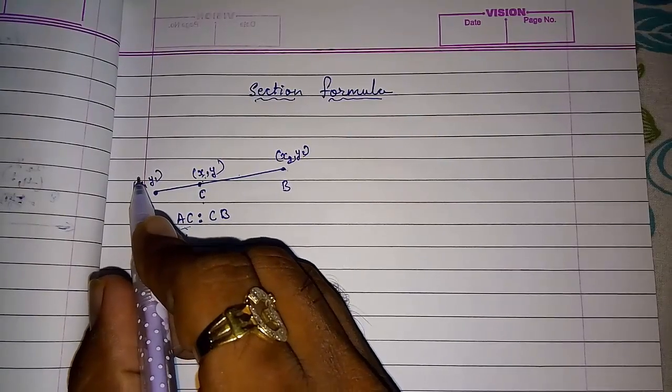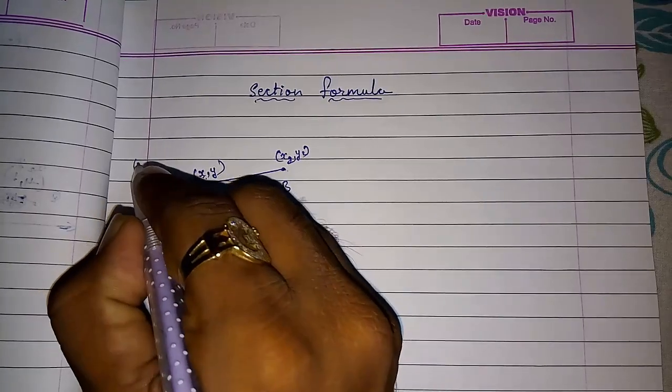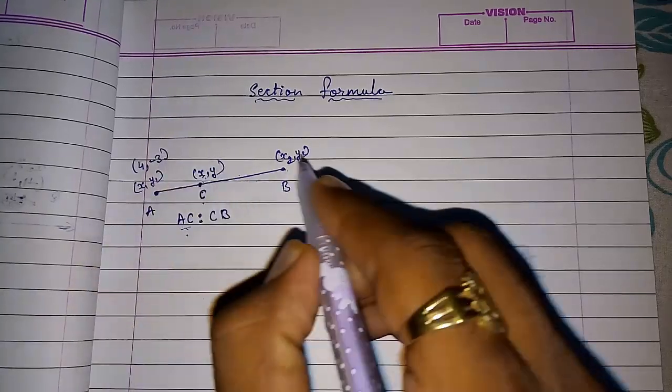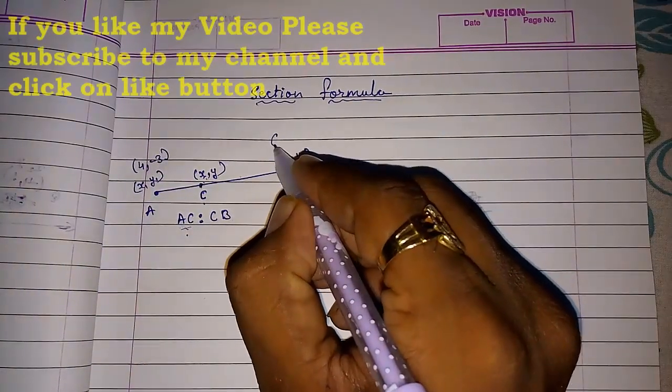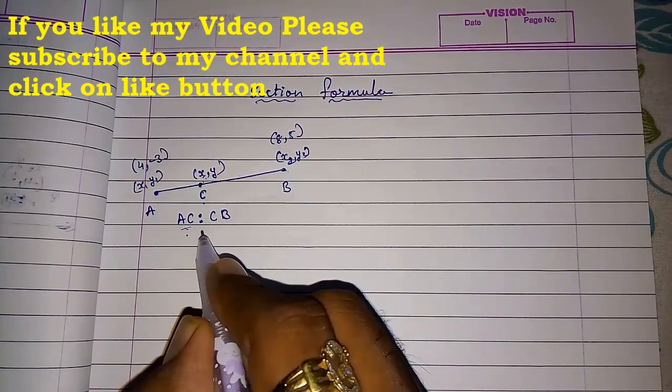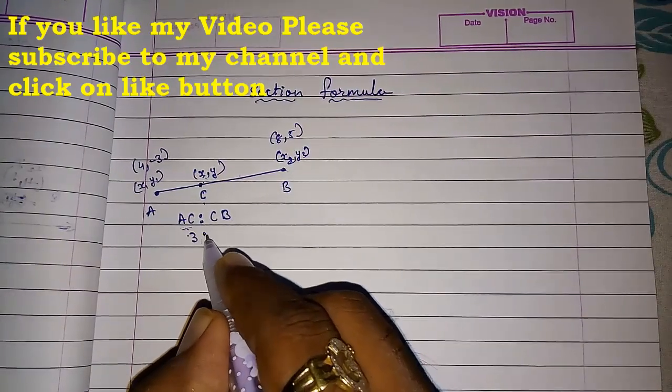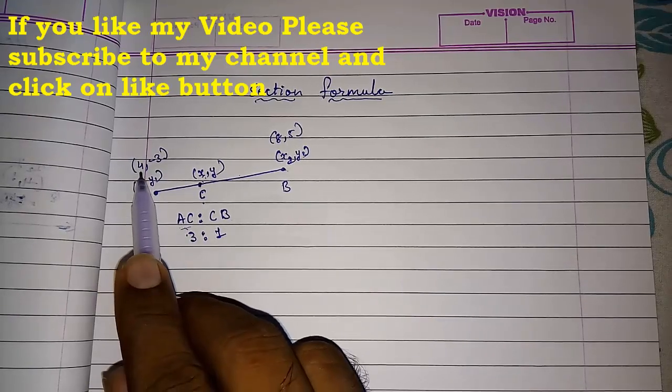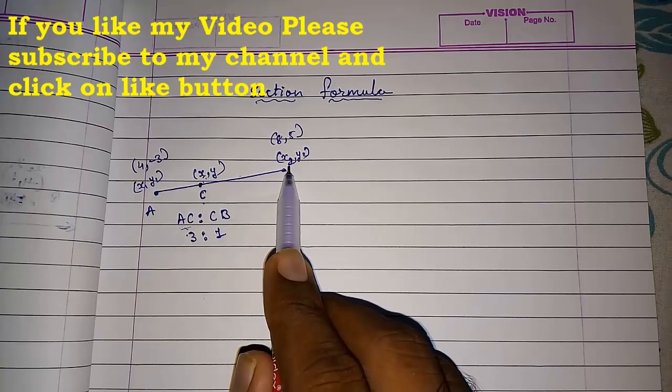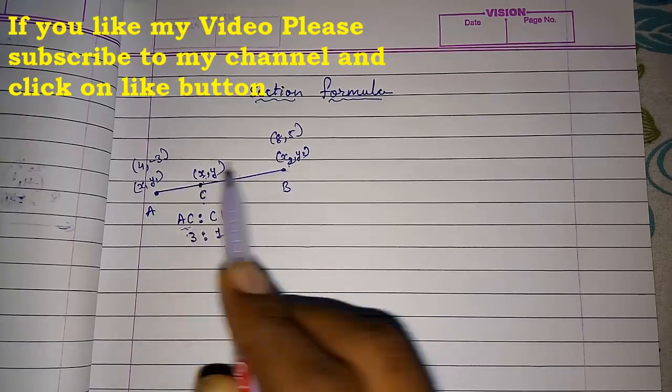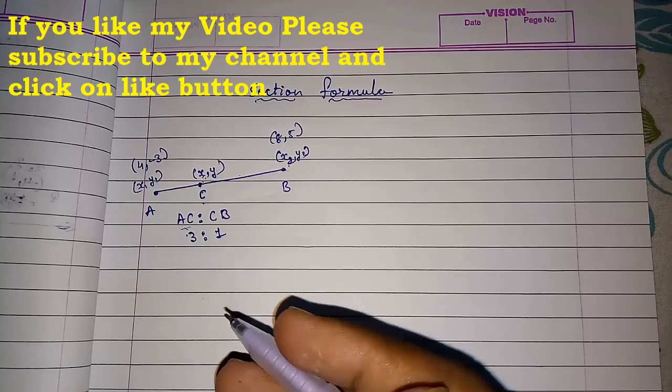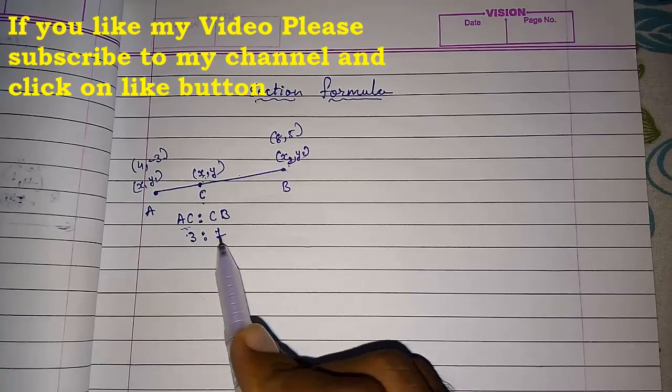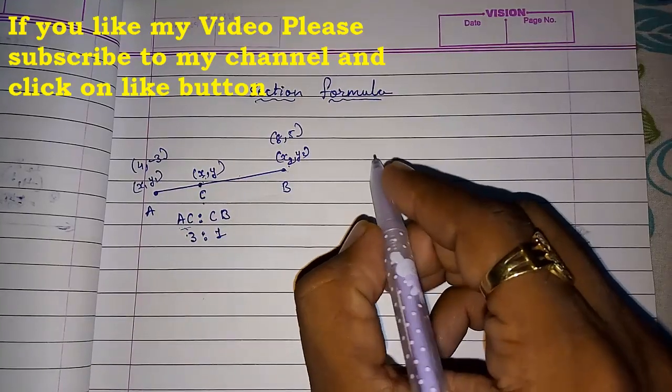Suppose the coordinate of A is 4 comma minus 3 and the coordinate of B is 8 comma 5, and they had given us the ratio 3 is to 1. I am going to solve by both methods. Now here they had given us ratio and the coordinates of A and B, then we can find the coordinates of this C. In my next part I am going to solve when they will give you this point and we will find the ratio.